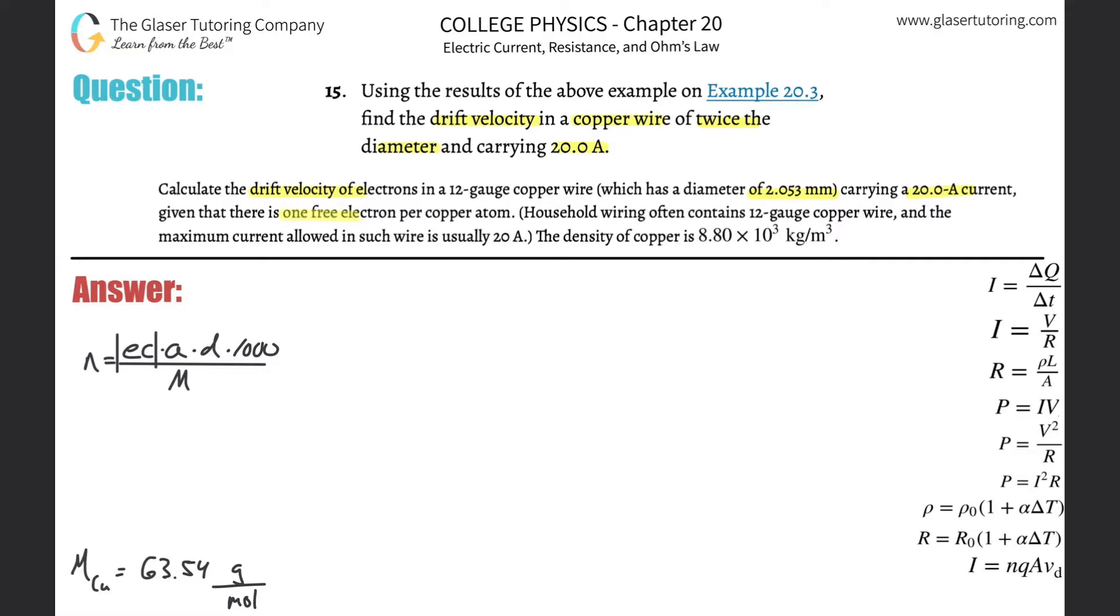The current's the same, and it says that it has one free electron per copper atom. They also tell us the density of the copper. So in order to find the drift velocity, we need to know what formula has drift velocity in it. And it turns out that this is the formula: the current will equal the electron density n multiplied by the charge, basically of an electron, a charge per charge particle, multiplied then by the cross-sectional area of the wire, then multiplied by the drift velocity. So if I want to find drift velocity, all I have to do is divide these three variables over to the left-hand side.